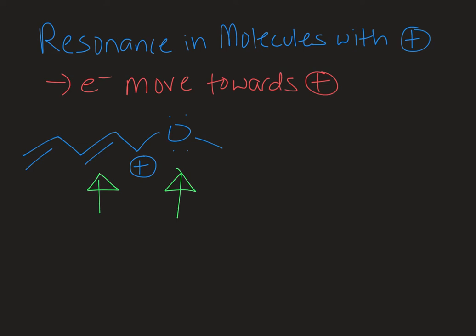So I'm going to start from a lone pair of electrons on the oxygen. Those can fold down to be shared between the oxygen atom and the carbon that was electron deficient, the carbocation. And that will give me this structure over here.